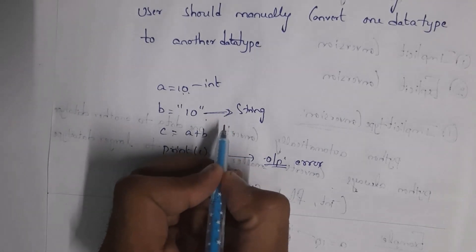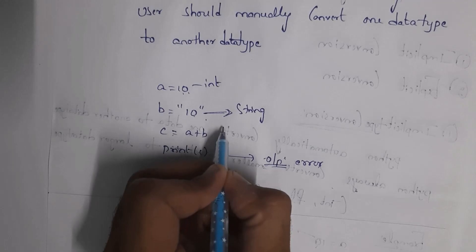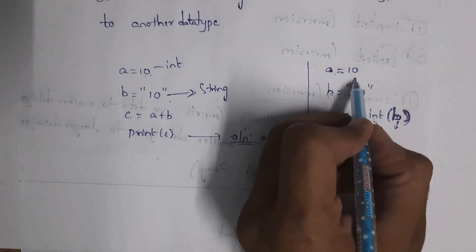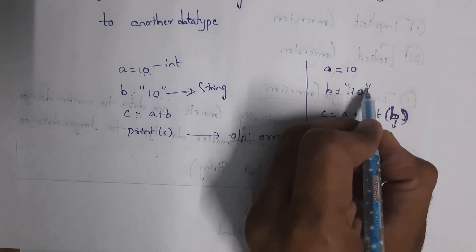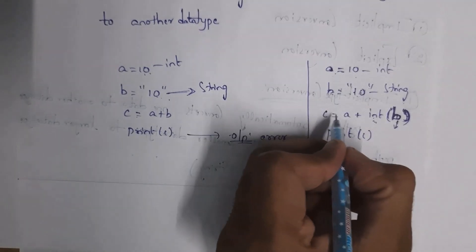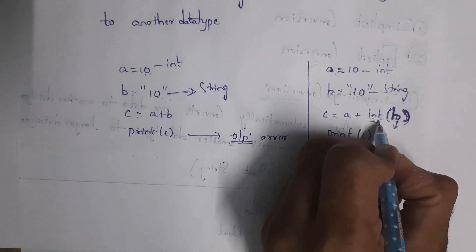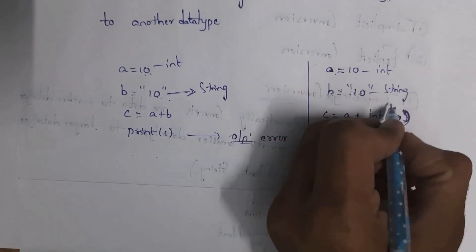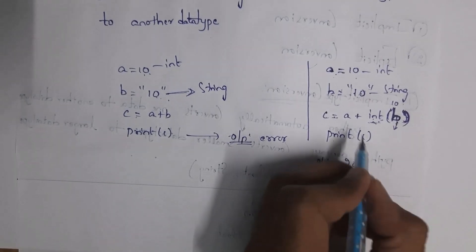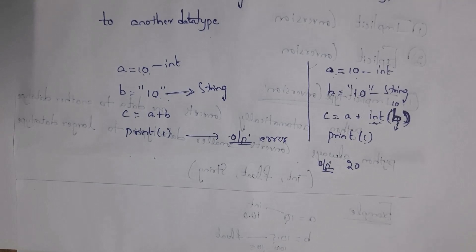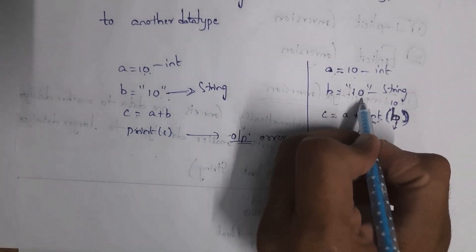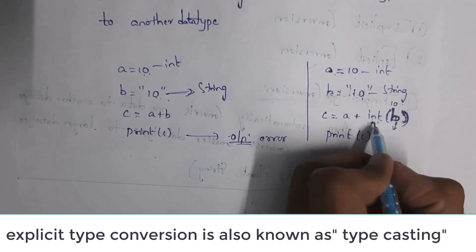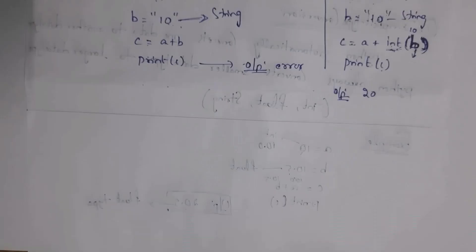The user must manually convert the string value to an integer using the int() function. For example, with a = 10 and b = '10', I write c = a + int(b). The int() function converts string '10' to integer 10. Now print(c) gives output 20. Since the user manually converted the data type, this is called explicit type conversion.